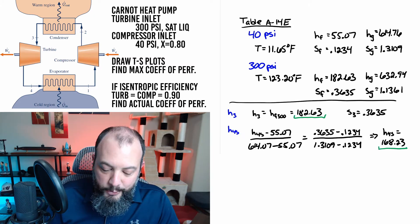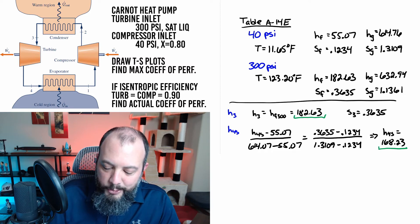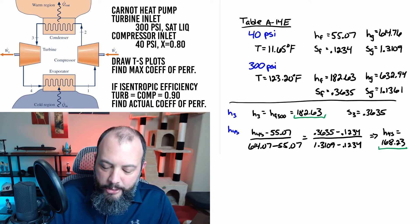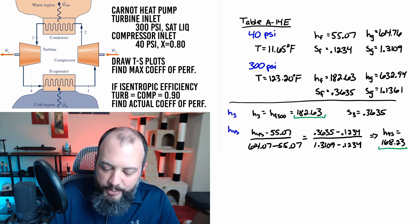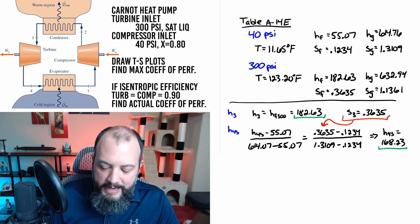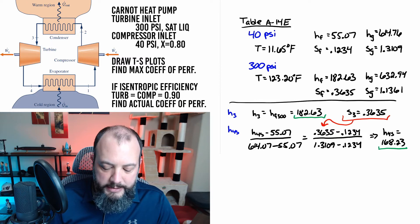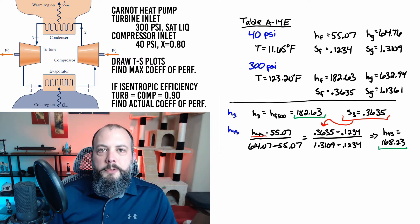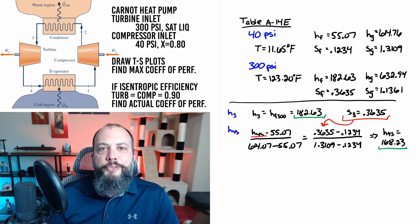In order to find enthalpy at point 4s we're going to have to use the enthalpy at point 3. Because 3 to 4s is an isentropic process point 3 has the same entropy as point 4. So the right hand side of this fraction is the quality of point 4s and the left hand side is also quality but in terms of enthalpy. So a little calculator work and we can get the value for H4s.